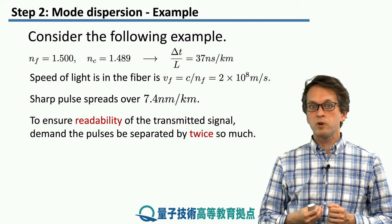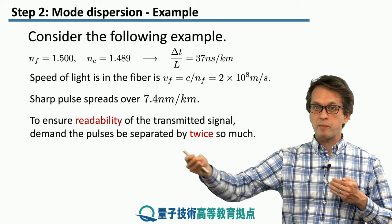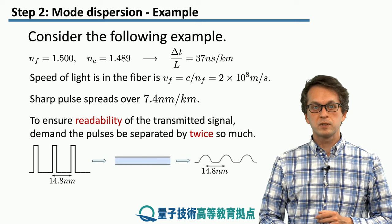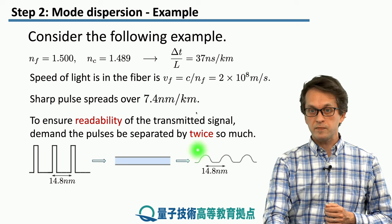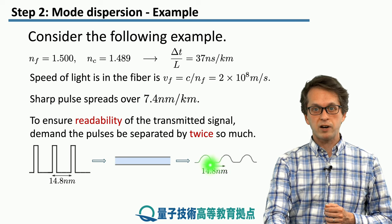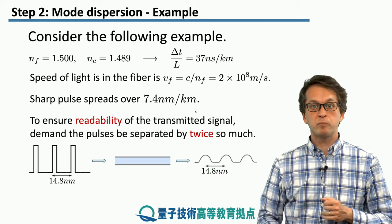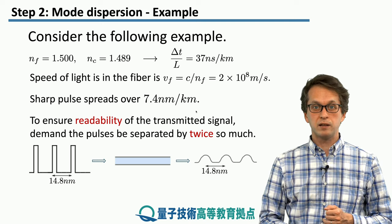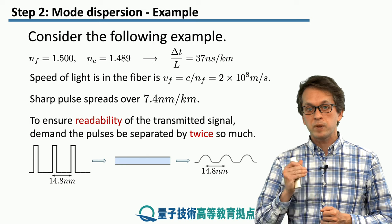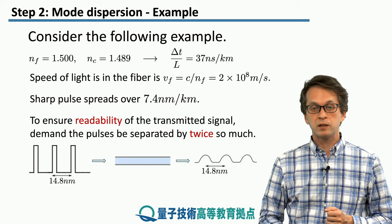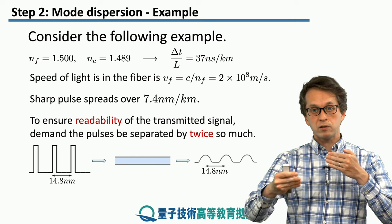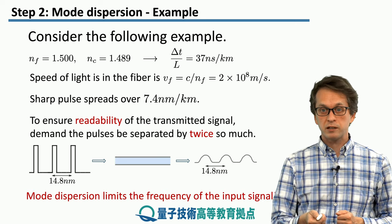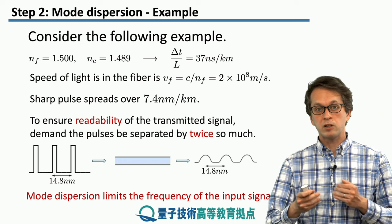In order to read the output signal, we may demand that the pulses coming out of the fiber are separated by twice the value of the spreading — meaning the dispersed pulses must be separated by 14.8 meters, requiring that input pulses are also separated by at least 14.8 meters. This places a limit on how fast we can transmit information, since we cannot place pulses more closely together or send information at a higher frequency. Dispersion therefore directly limits our bandwidth.